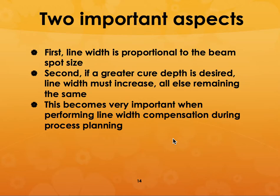From this, the software can determine how much time it will take to make the part, which controls the cost of the final part. For the same part, the raw material cost of the resin is going to be the same. The difference is the time to make the part, which is directly proportional to the line width — which in turn is controlled by the cure depth, and in turn by the beam spot size.